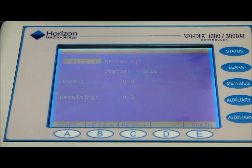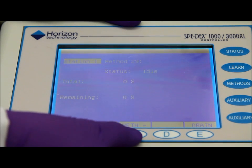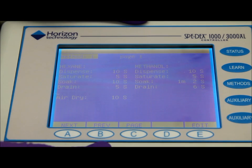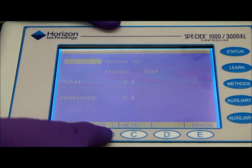You can easily go into this controller and find the method that you want to use. There are pre-programmed methods as well as customizable methods that you could use. And you can easily choose your method, press start and hit yes and it will begin your process.